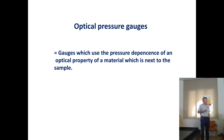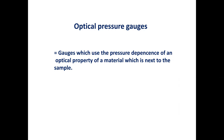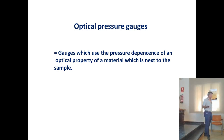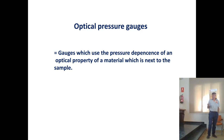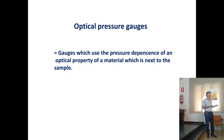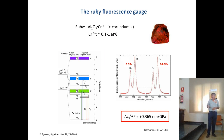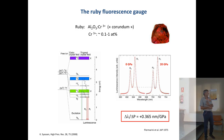Now we come to optical pressure gauges, which are of course very popular because so many people use diamond anvil cells. The success of optical pressure gauges goes with the success of the diamond anvil cell. These are mostly fluorescence methods. In principle you can use any optical property sensitive to pressure, but the fluorescence technique is the most famous — in particular, the ruby fluorescence gauge.